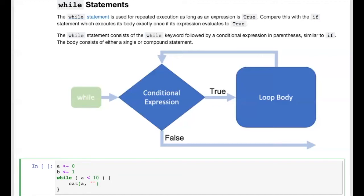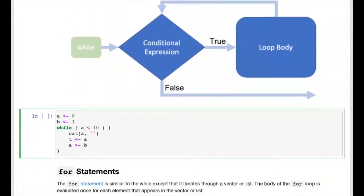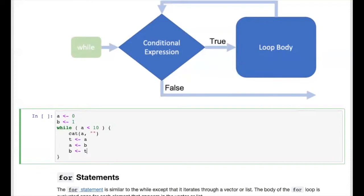At this point we have output the current value and now need to update both a and b. We employ a temporary variable t to hold the current value of a, then replace a with b, effectively moving a to the next value in the sequence. Then we update b to be the sum of t and a, since every element is the sum of the previous two. Now both a and b hold the new current and next values.